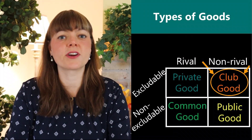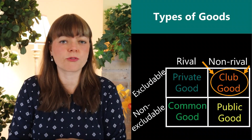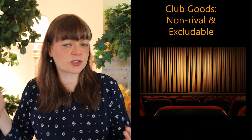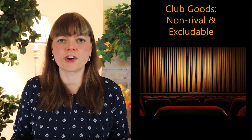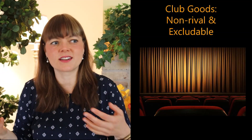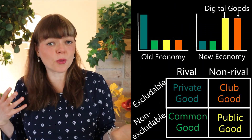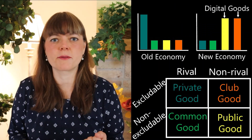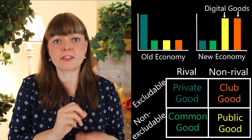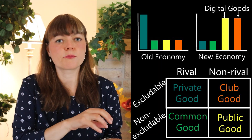The last good type is club goods, which are excludable but non-rival. A classic example is the movie theater, where you can exclude people from entering. But once they're there, one person enjoying the movie does not diminish another person's ability to enjoy the same movie. Comparing the old economy to the new digital economy, the old economy had a lot of private goods and most economic thinking focused on private goods.